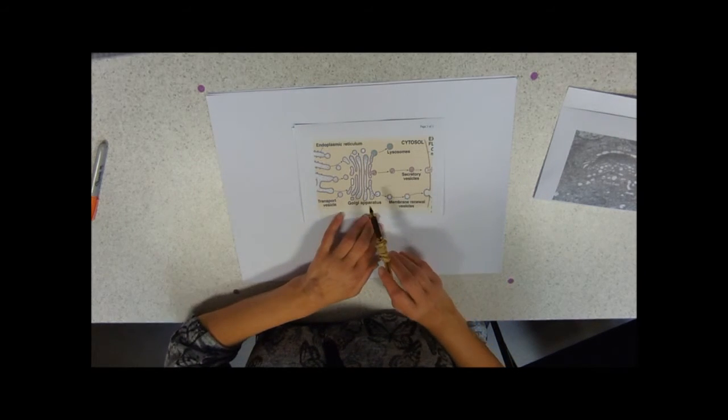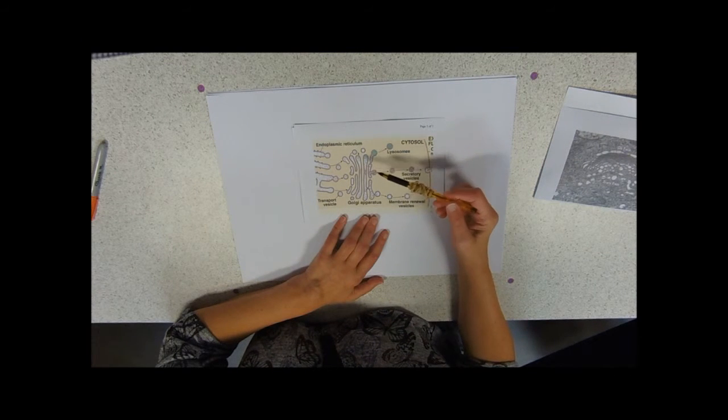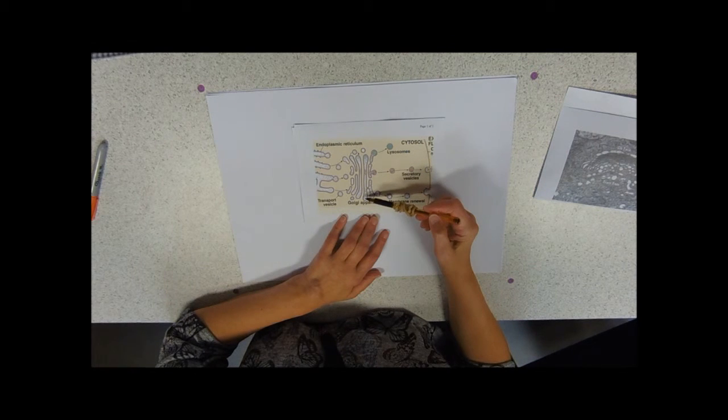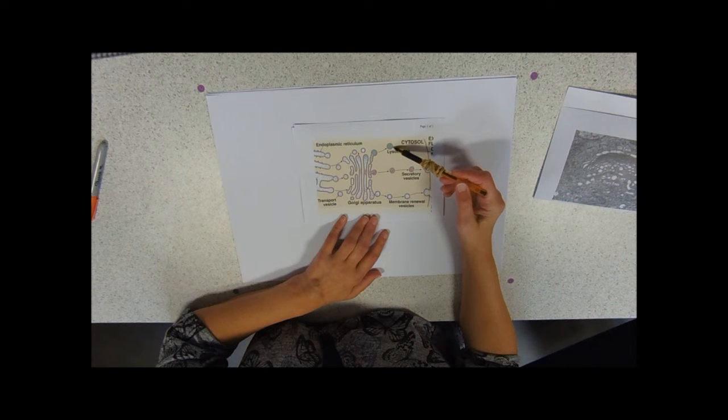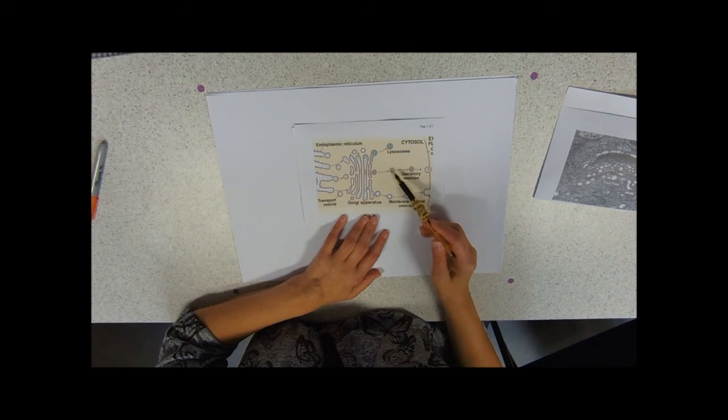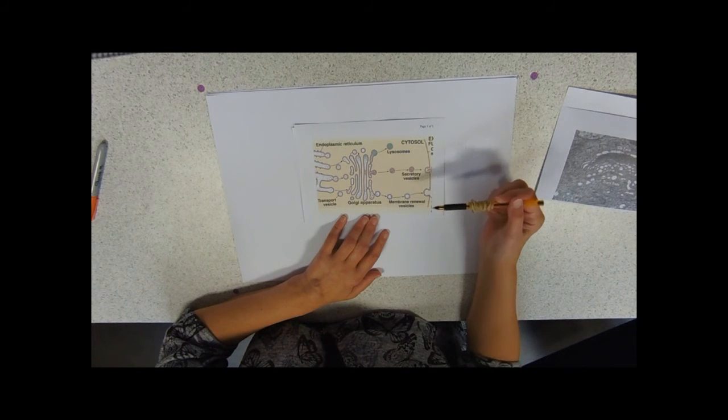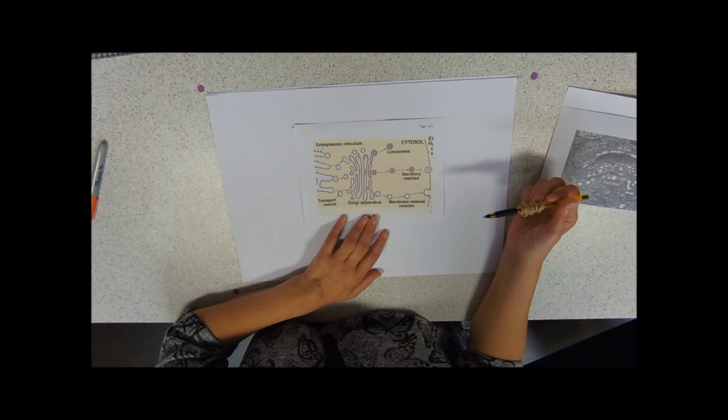Just in summary then. Golgi apparatus: curved stacks of cisternae, main function is modification of proteins. Main products: they make lysosomes, they make secretory vesicles which can move to the plasma membrane and release their contents, and they add new membrane into the cell membrane.